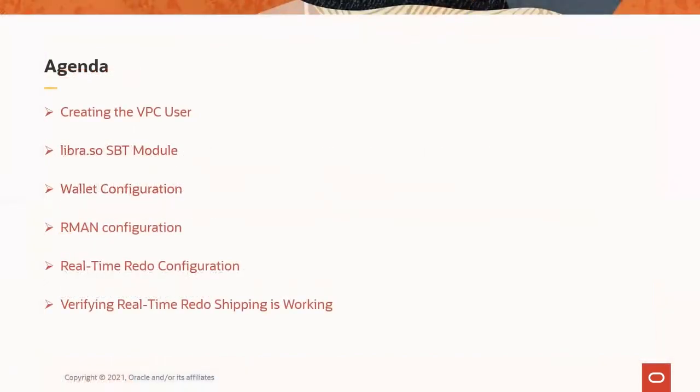Specifically, I'm going to cover the following topics: creating the VPC user on the ZDLRA, the libra.so SBT module, the wallet configuration including sqlnet.ora entries, RMAN configuration, real-time redo shipping configuration, and how to quickly verify real-time redo shipping is working.